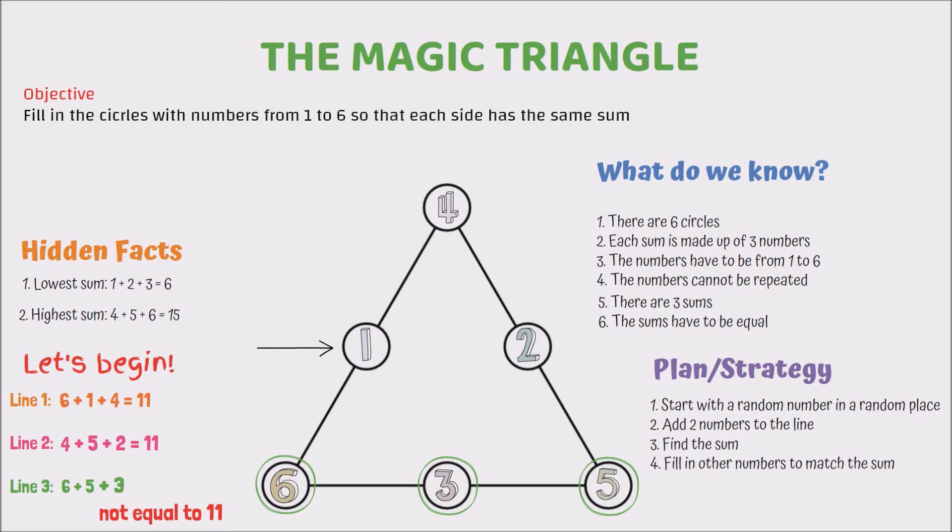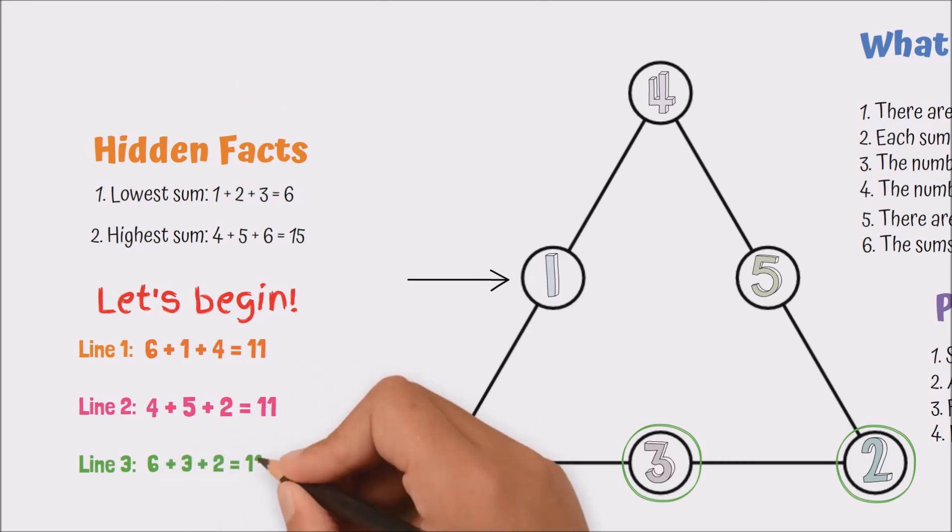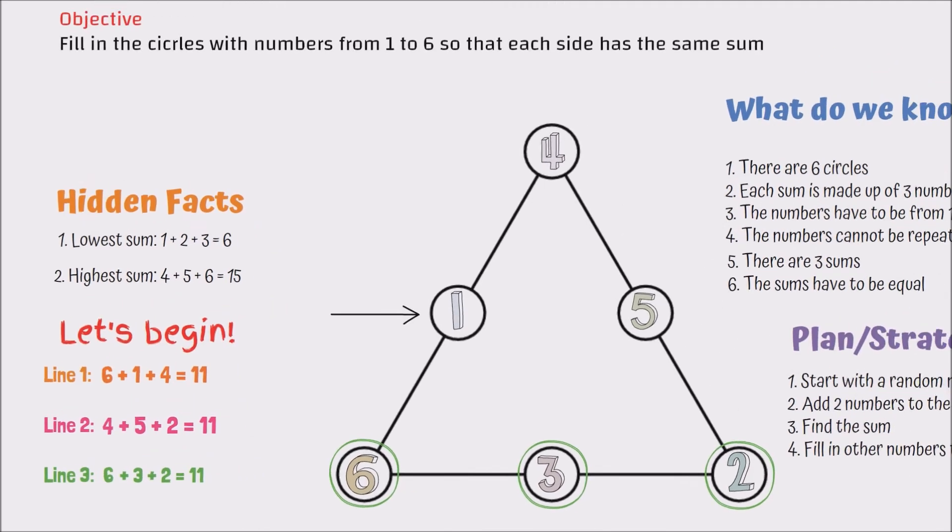What that tells me is that my first attempt, which was finding a sum of 11, was probably along the same lines. So instead of starting all the way over, I'm just going to go back and readjust. I'm going to change my 2 with 5. So 4 plus 5 is 9, which means that I need 2 to make it 11. And then finally, 6 plus 2 is 8. So that means I need 3 to make it 11. Did I solve it? Looks like I did. Awesome.